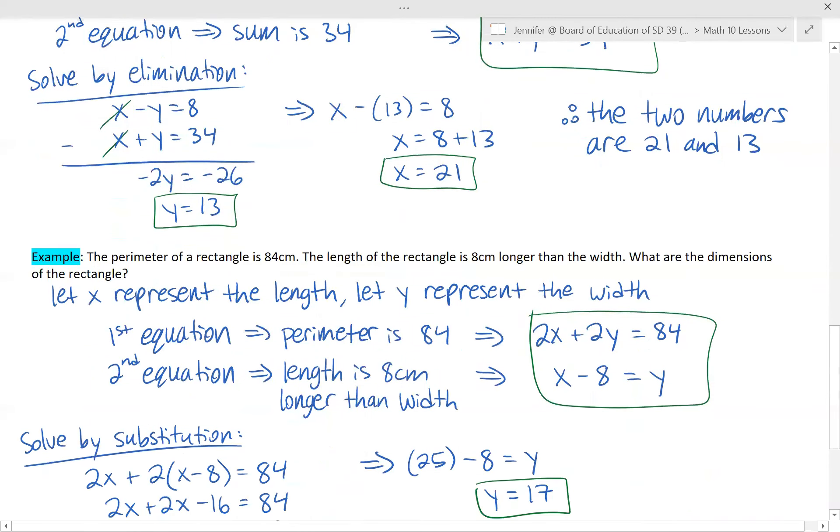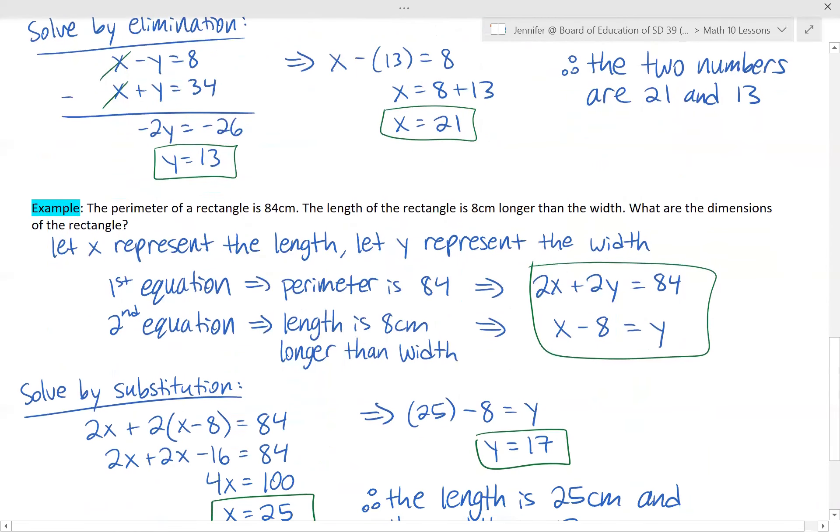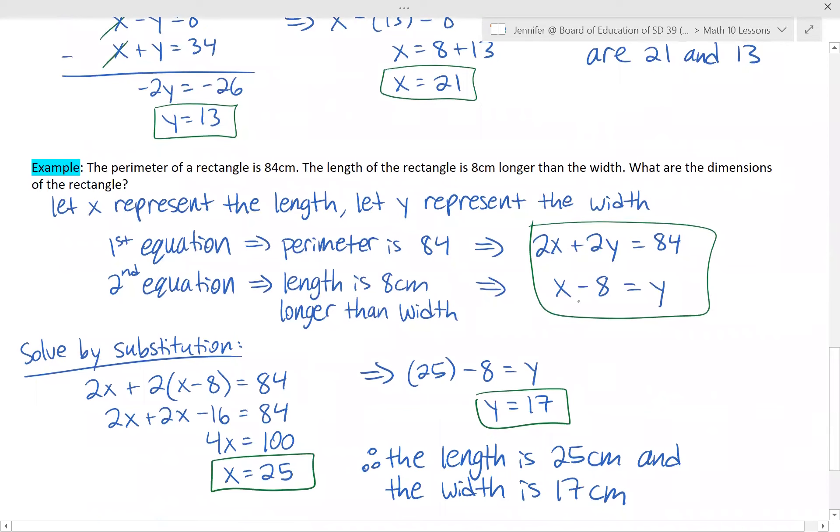And now we want to solve. I decided to solve by substitution because it was pretty easy to isolate for the Y, which is already isolated for in that second equation. So I substitute in the first one, I substitute Y with X minus 8. I distribute the 2 into the brackets, collect my like terms, and I get that X is 25. I sub that into one of my original equations, and I get Y is 17.